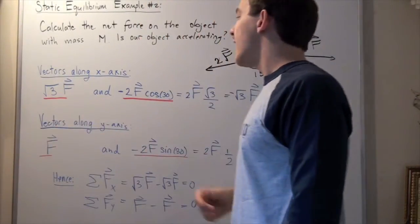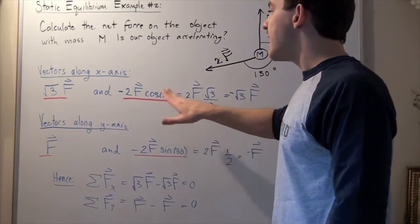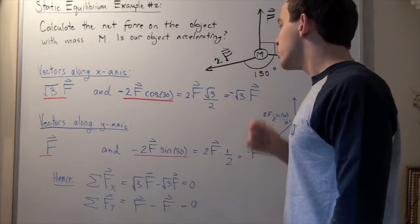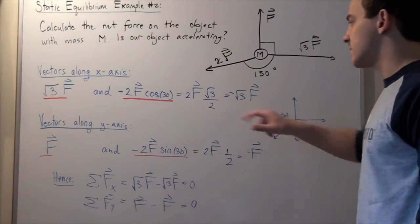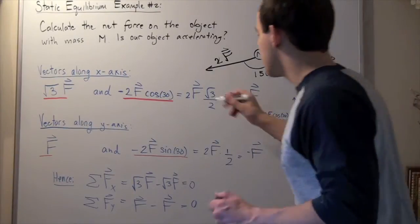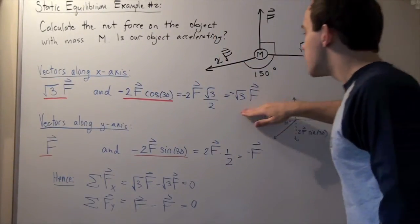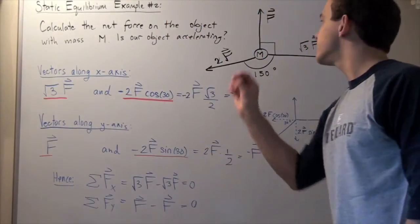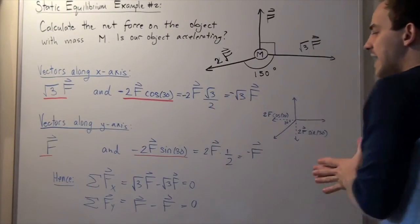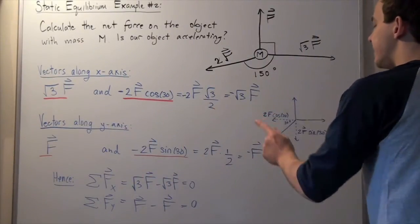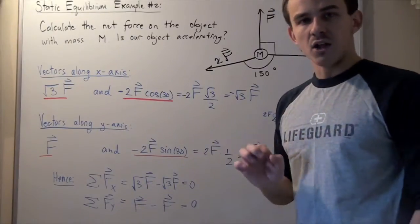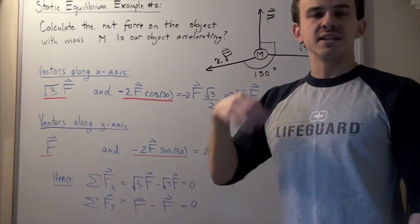Summing the x-axis vectors: √3F plus (−2F·cos30). Since cos30 = √3/2, we get −2F·(√3/2) = −√3F. The two terms are √3F and −√3F — the same magnitude but opposite directions. So the net force along the x-axis is √3F − √3F = 0. Our object is not accelerating along the x-axis.